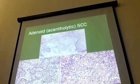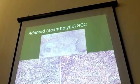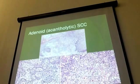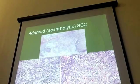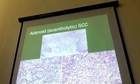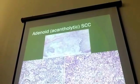Adenoid squamous cell carcinoma is really an acantholytic type of carcinoma — the tumor just sort of falls apart into single cells. Because of this, it can be confused with adenocarcinomas at times, and you may wonder if it's a poorly differentiated adenocarcinoma. But if you recognize its origin on squamous mucosa rather than originating in a salivary gland, that will help you make the correct diagnosis.